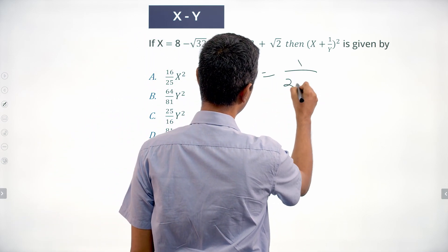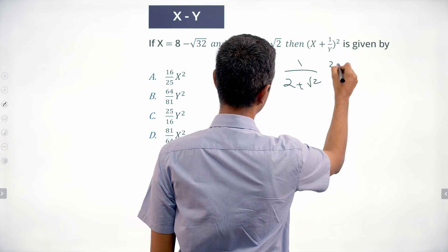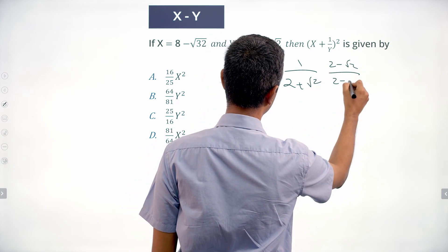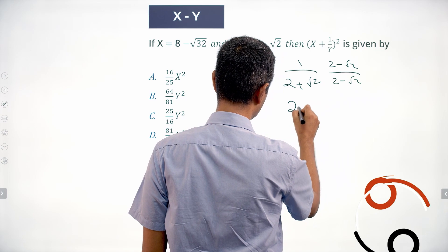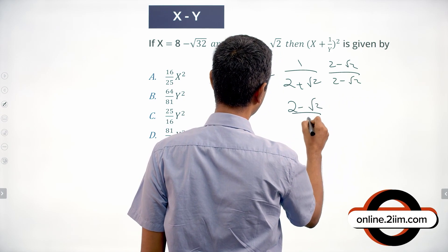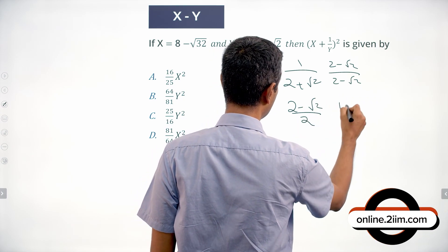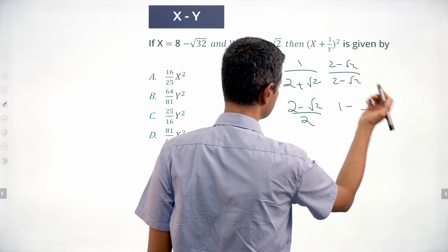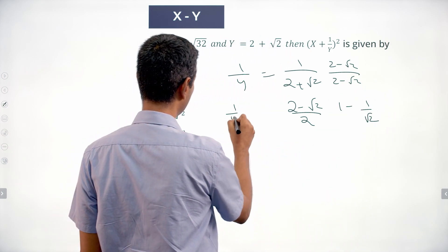1 by y is 1 by 2 plus root 2. So it is 2 minus root 2 by 2 minus root 2, multiply by that. That is 2 minus root 2 by 2, or 1 minus 1 by root 2. That is what 1 by y is equal to.